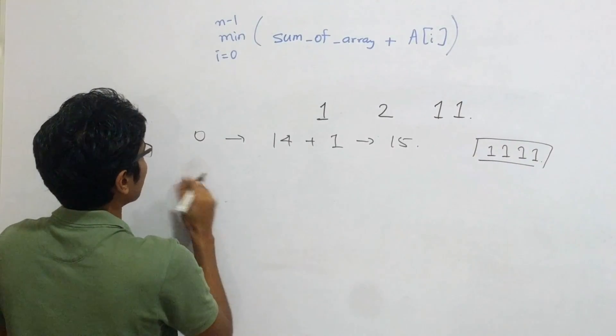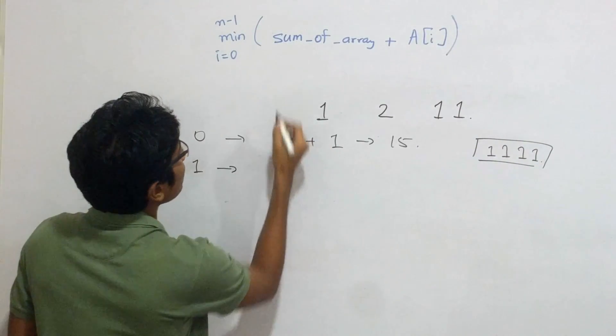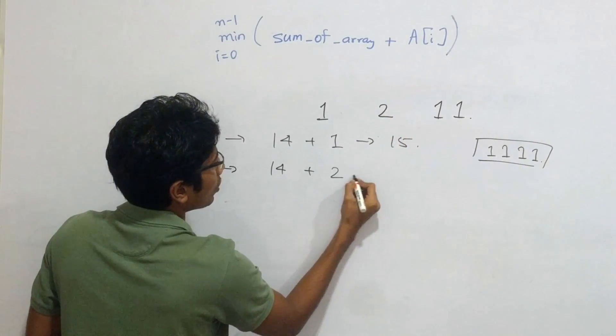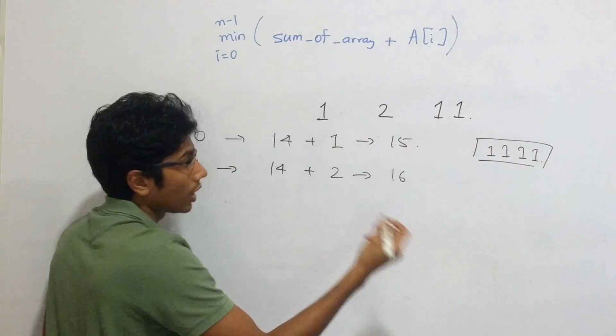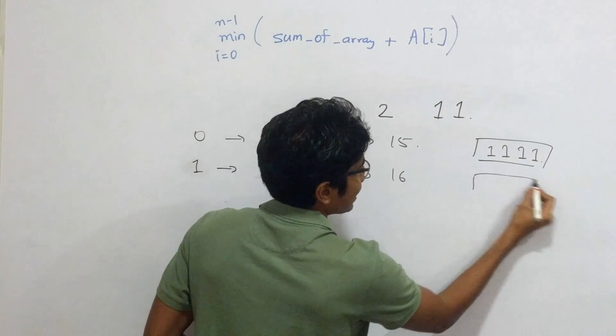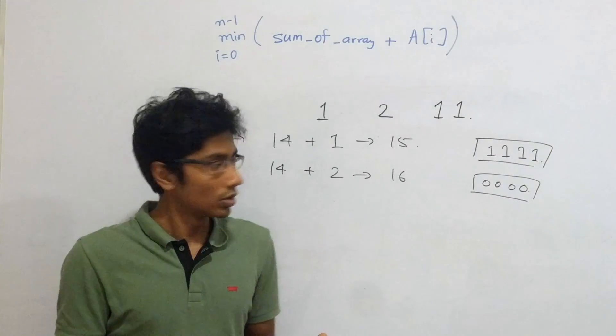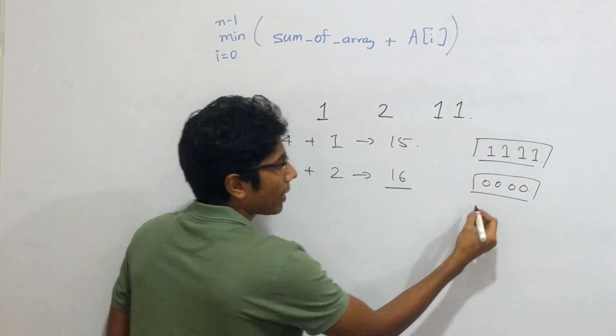Now for the second index, what we have is sum of array is still the same, 14 plus this value 2 gives you 16. 4-bit integer, there is an overflow. And so look at this, you have a value of 0. So instead of getting the value of 16, you have a value of 0.